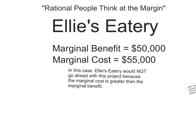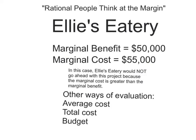What are some other ways of evaluating a project? Average cost, total cost, budget — whether it fits in with the budget, whether you have access to that money. There are all kinds of other ways of looking at and evaluating a project. But this principle is about one way, and this is an economic way of thinking: thinking at the margin, or marginal analysis.